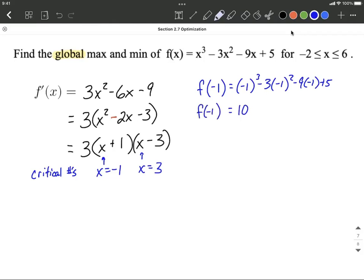We also want to do the same thing with 3. So f of 3 back into the original. And after a little bit of work, maybe use your calculator to help you out, we should get negative 22.